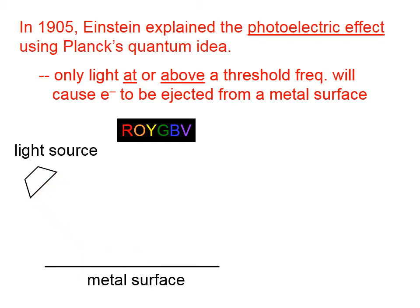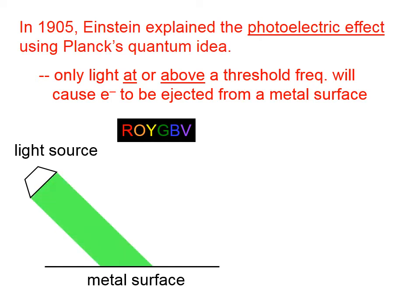Let's go to a slightly higher frequency, like orange — again, no electrons are ejected. Let's keep ramping it up. How about yellow wavelengths? Nope, no electrons are ejected. What about green? Still nothing.